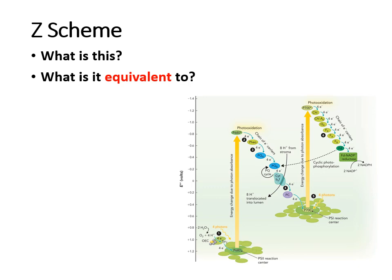Another term to recognize is the Z scheme. Officially, the Z scheme is defined as a series of photosystems. When you look at it and see electrons getting passed down what looks like a set of stairs, that should remind you of the electron transport system from oxidative phosphorylation. So the Z scheme is technically a series of photosystems passing along electrons, and it is equivalent to the electron transport chain we saw in oxidative phosphorylation.